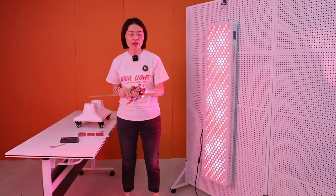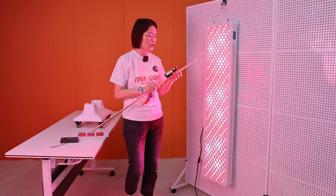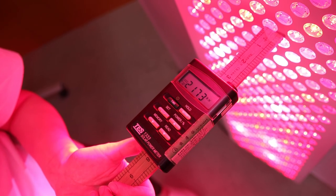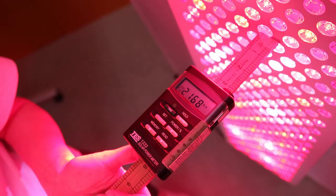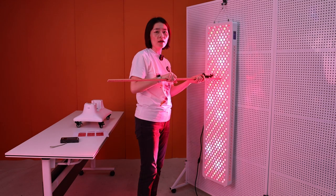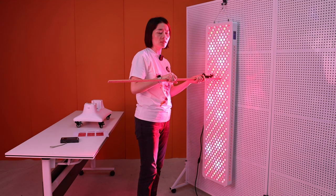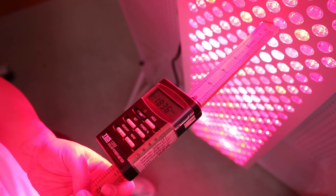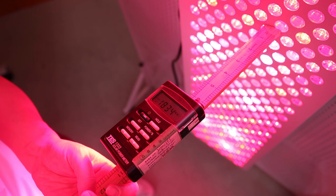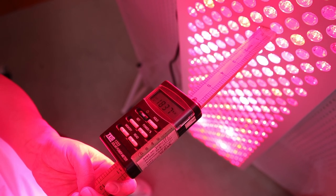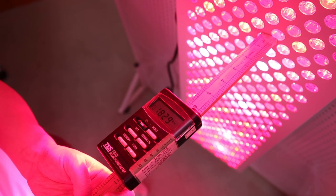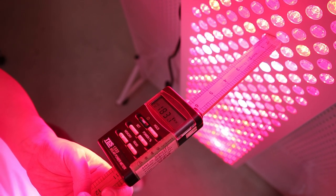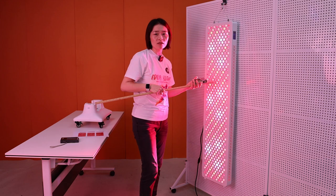Let me test the irradiance to show you. Three inches distance, the irradiance is more than 200 milliwatts per square centimeters. Right now we are testing at the distance at 6 inches. You can see the irradiance is 1,830 watts per square meters. So the irradiance is very high.